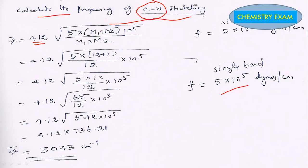So we can use now carbon molecular weight 12 plus M2 value 1 for H. So 5 times (12+1), which is 13. And then M1×M2 equals 12, meaning 12×1 equals 12, times 10^5.